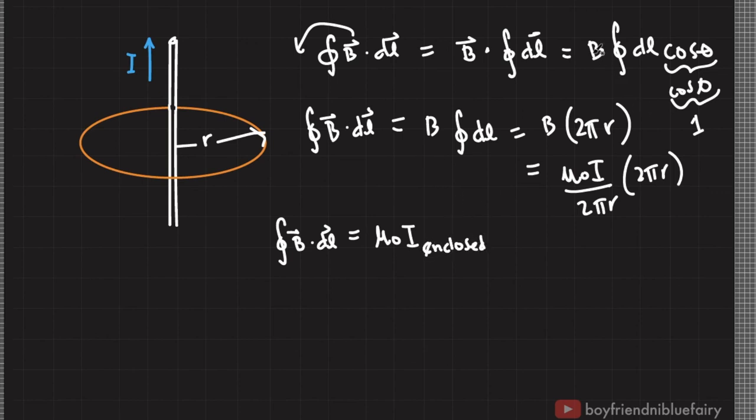Because we were able to derive everything based on the assumption that the current that we are calculating is enclosed in the integration path. So this relationship has a special name. And we call this as Ampere's Law.